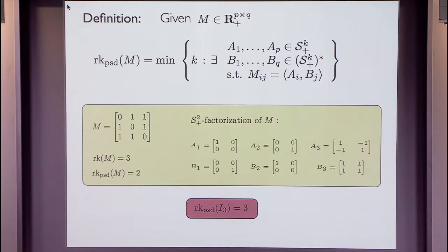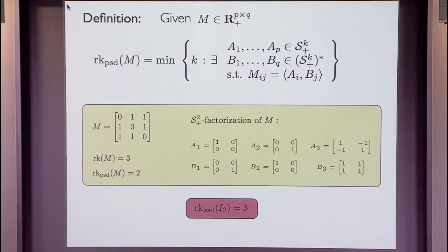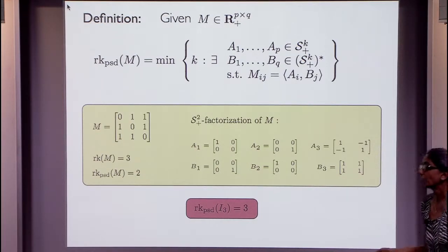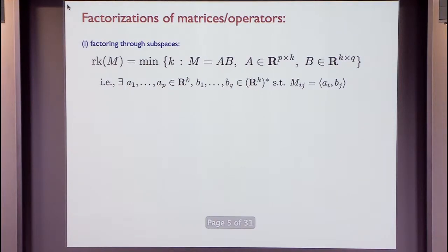For another 3 by 3 matrix like the identity, the PSD rank is actually 3. We'll see shortly that for a 3 by 3 matrix the only two possibilities for PSD rank are 2 and 3. This is the basic definition and a simple example.